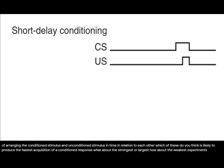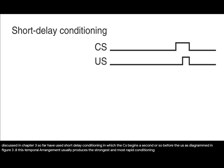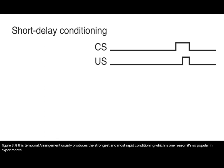All of the experiments discussed in Chapter 3 so far have used short delay conditioning in which the CS begins a second or so before the US as diagrammed in Figure 3.8. This temporal arrangement usually produces the strongest and most rapid conditioning, which is one reason it is so popular in experimental research.